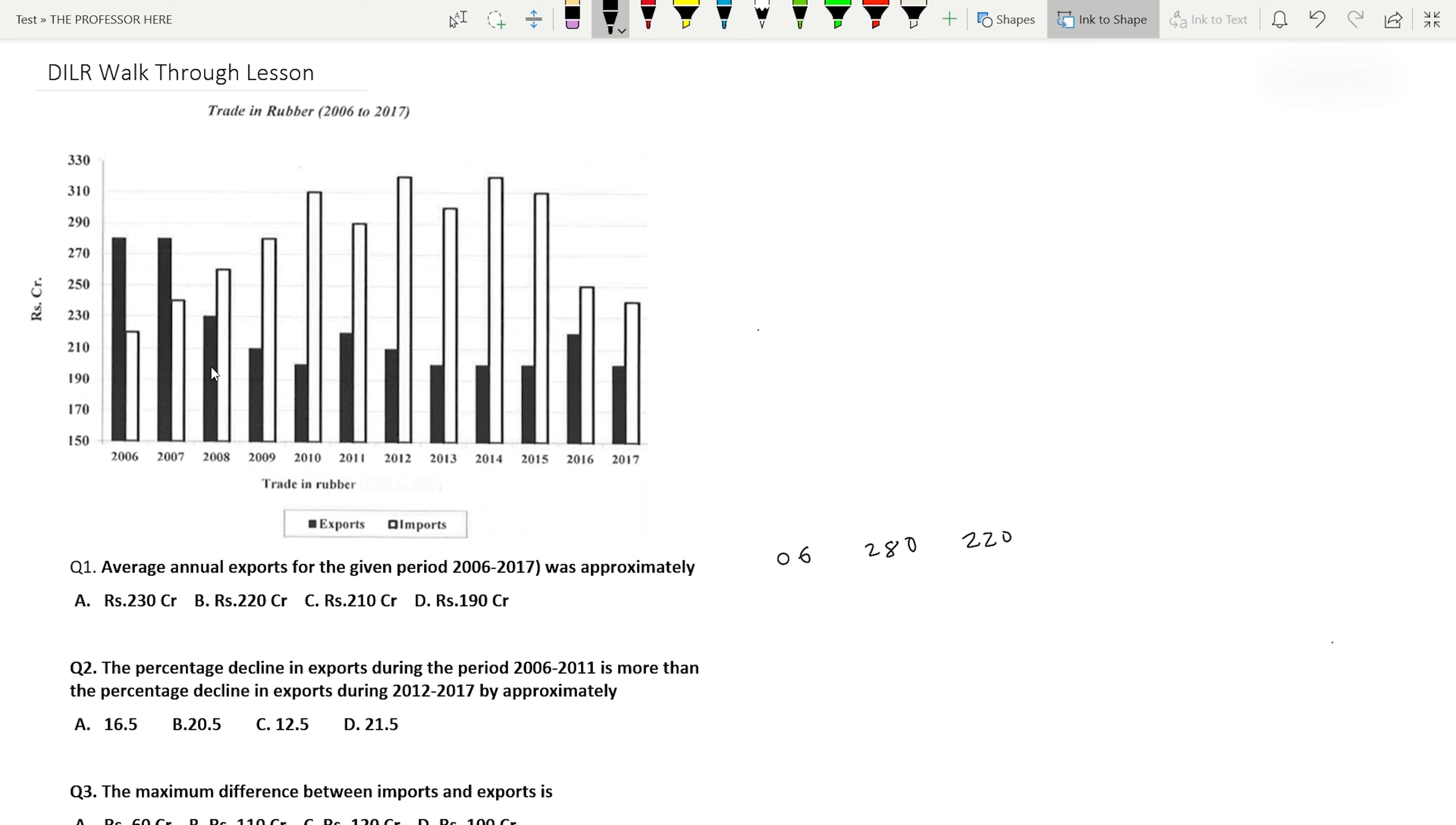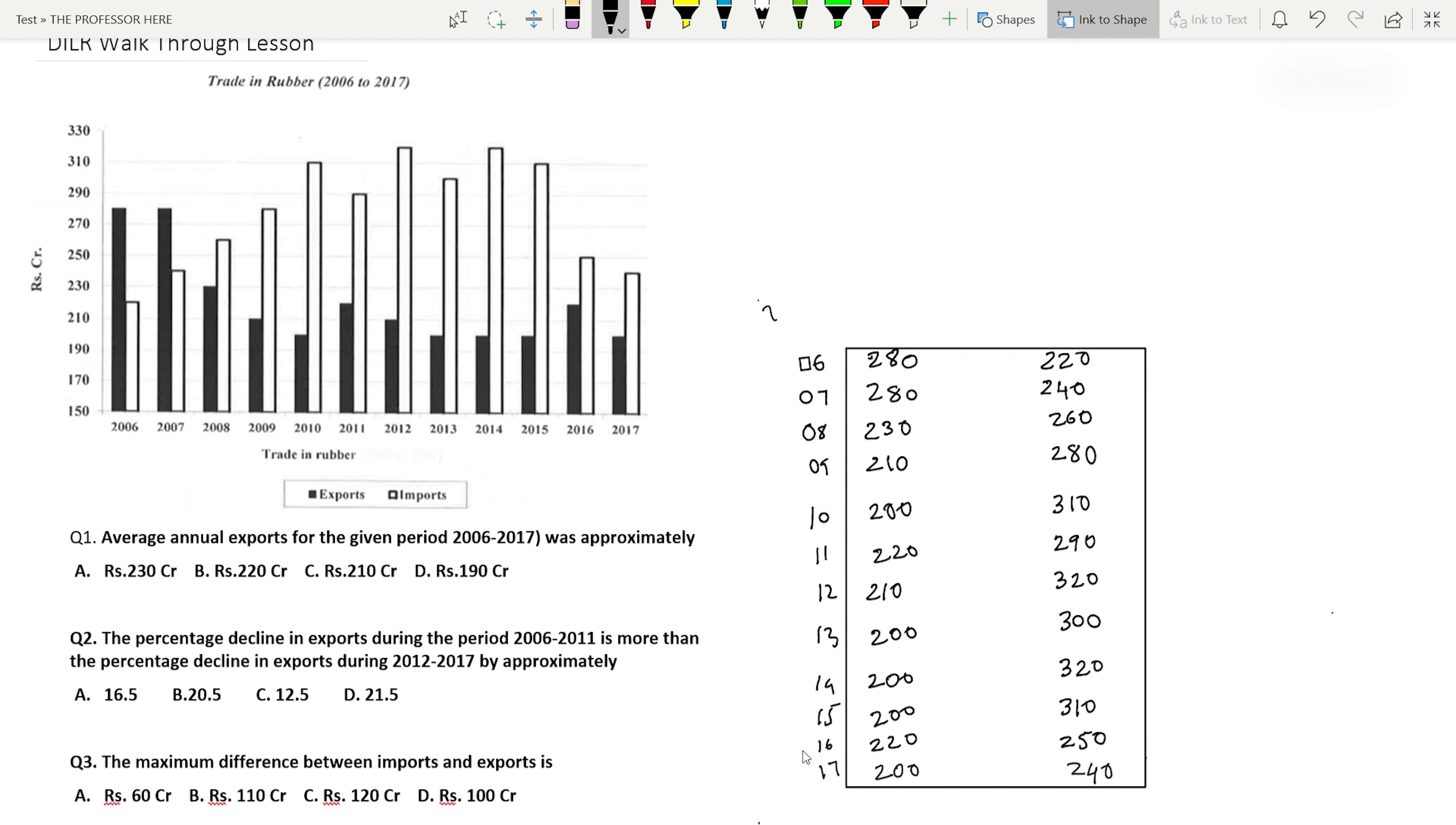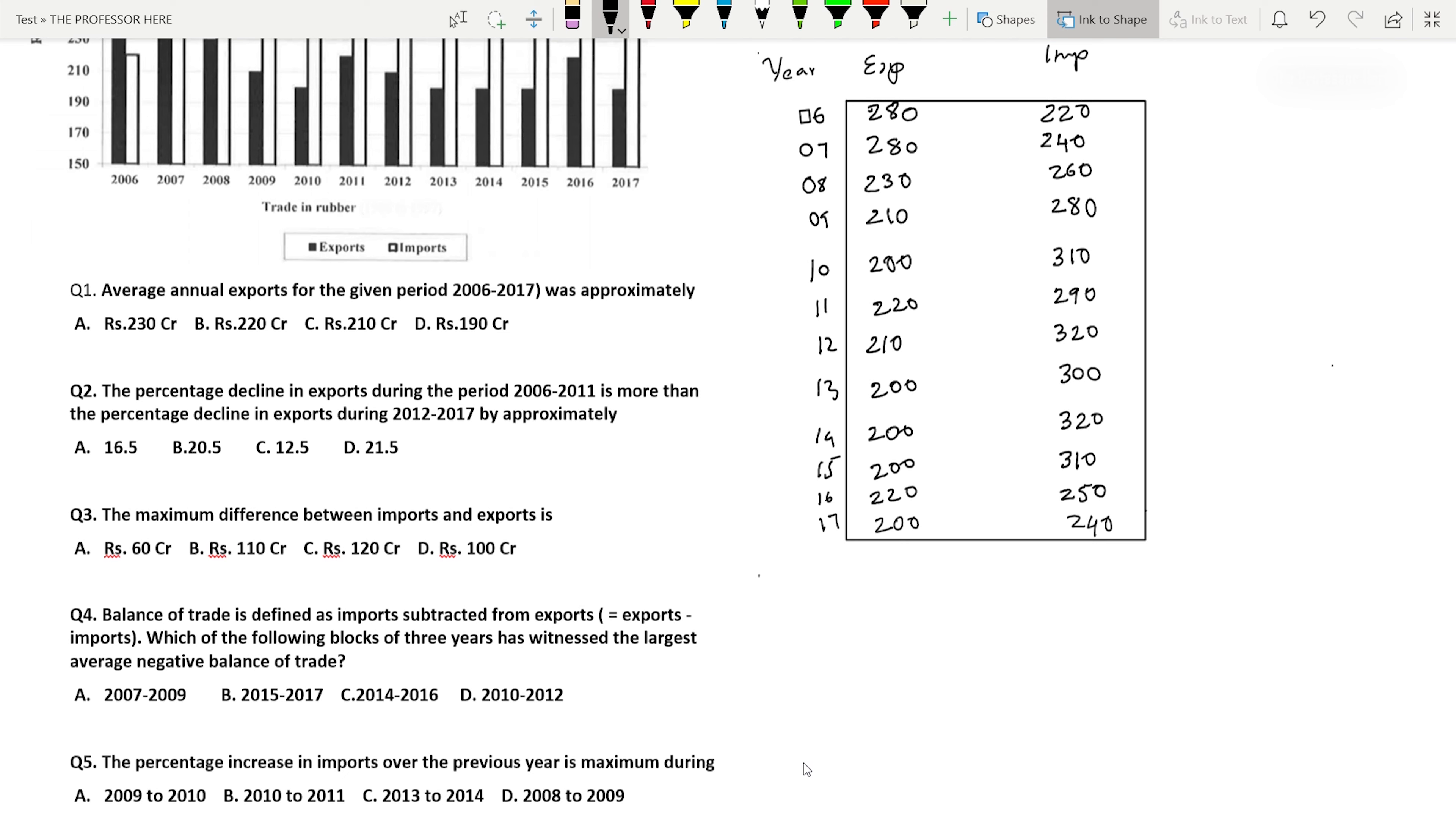As you can see, the first step we're going to do is to convert this bar graph into a table. Here I have filled up the table with year, exports, and import. It is very important that you draw this table so it's easier to do the problems as we move forward. There are five questions in this session, so having a table will help you solve these questions much faster.